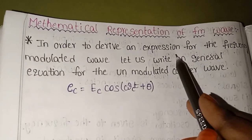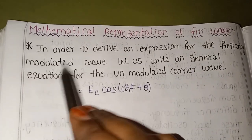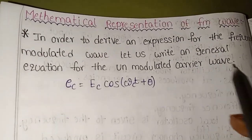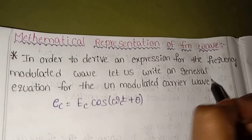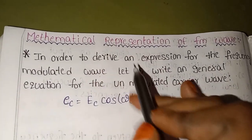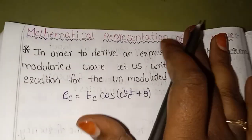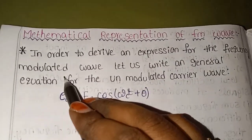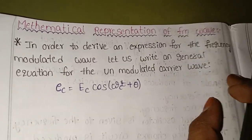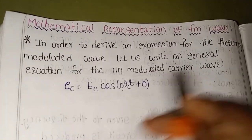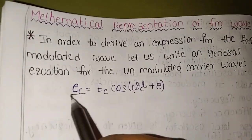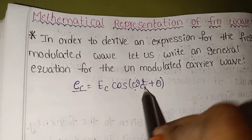In order to derive an expression for the frequency modulated wave, let us write a general equation for the unmodulated carrier wave. The general equation for the unmodulated carrier wave is: EC is equal to EC cos(ωct).